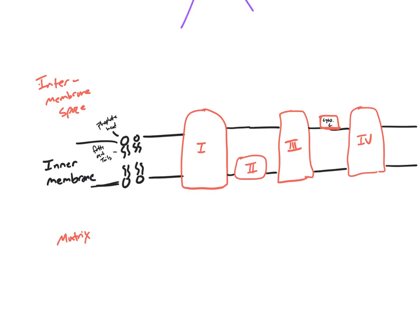So this electron transport chain process is going to start with NADH that was produced in the Krebs cycle. It's going to react with this first protein. It's going to become NAD+. It's going to release hydrogen ions and it's also going to release two electrons.